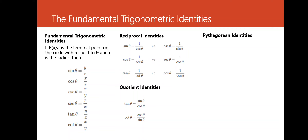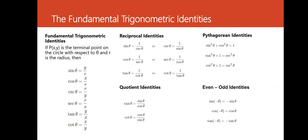Next, we have the Pythagorean identities: sine squared θ plus cosine squared θ equals 1; tangent squared θ plus 1 equals secant squared θ; and cotangent squared θ plus 1 equals cosecant squared θ. The last set of identities is the even-odd identities: sin(−θ) equals negative sin θ; cos(−θ) equals cos θ; and tan(−θ) equals negative tan θ.